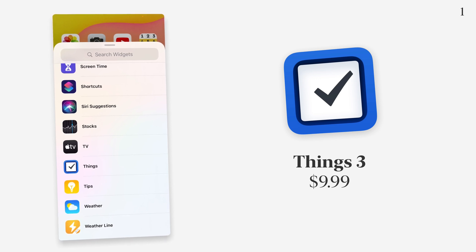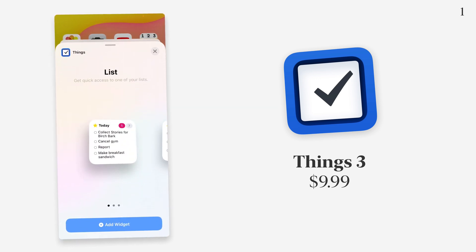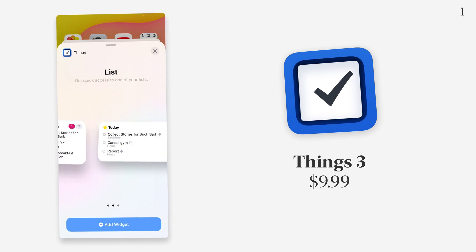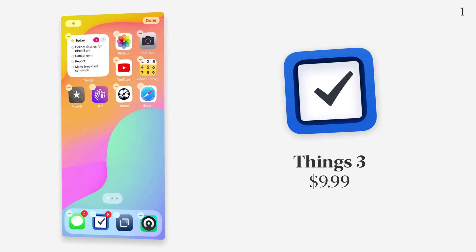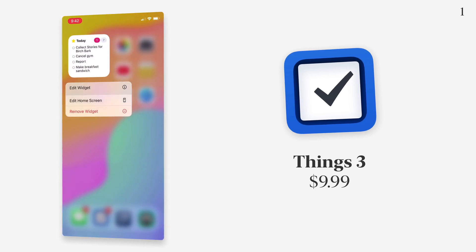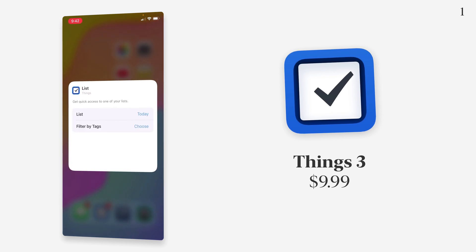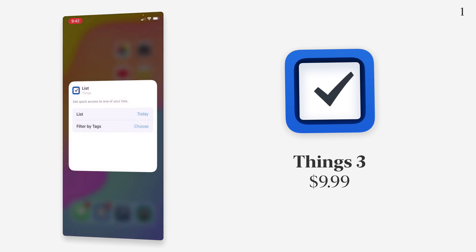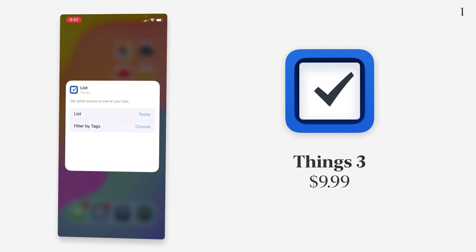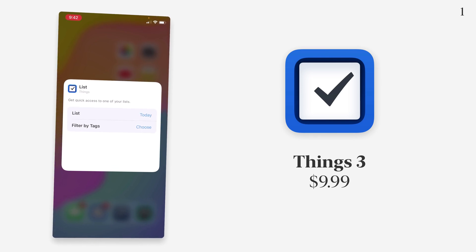The first app that I think has done a really great job with widgets is Things. Things is a task manager and there are three different options for it — one for each size. If I add this to my home screen, it'll show up right there. If I press and hold on it, I can edit the widget and then choose what list I want to show. I can show today by default, but I can filter by any of my other projects. So you can put multiple widgets on the screen for each different project you're working on, letting you see a ton of things at once if you want your home screen to be very productivity focused.